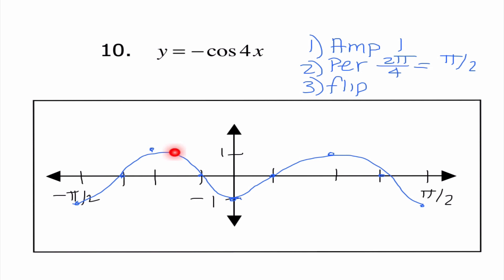I know I went kind of quickly through these last few examples, but hopefully we've seen enough to get the gist of what we need to do in order to accurately graph our sine and cosine functions.